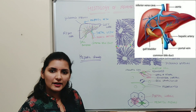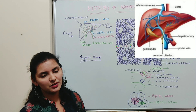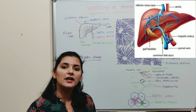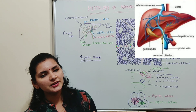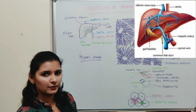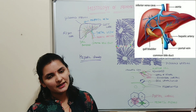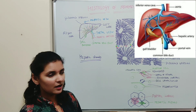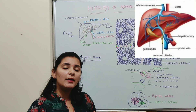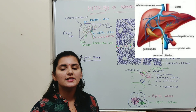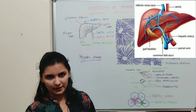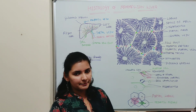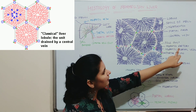The hepatic artery carries oxygenated blood to the hepatocytes or liver. The portal vein carries blood rich in nutrients from different parts of the digestive tract — such as blood from the intestine, spleen, and pancreas — to the liver via the portal vein. The bile duct carries bile juice away from the hepatocytes and conveys it to the duodenum. These three structures together constitute the portal triad.